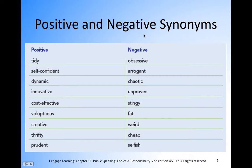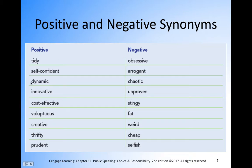Some examples of positive and negative synonyms: tidy versus obsessive, self-confident versus arrogant, dynamic versus chaotic, innovative versus unproven, cost-effective versus stingy, voluptuous versus fat, creative versus weird, thrifty versus cheap, and prudent versus selfish. If you go into the education field, you'll really learn how to use positive terms to shine a positive light on maybe some negative things you observe in your students.